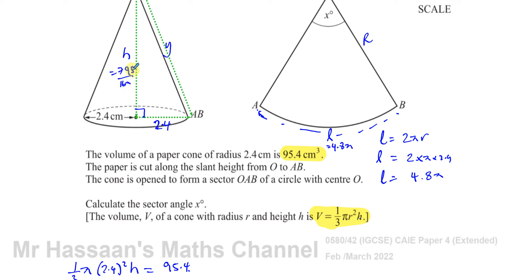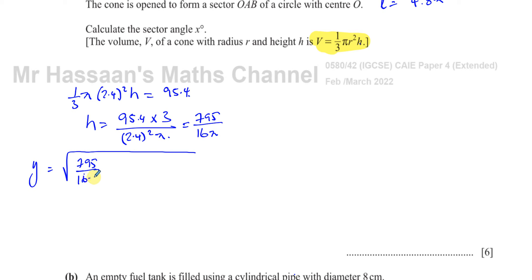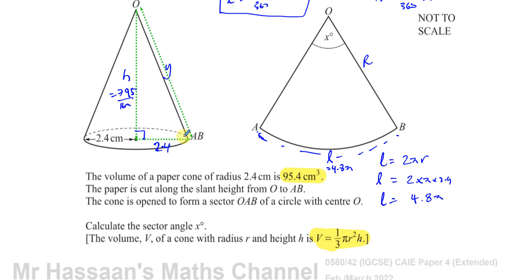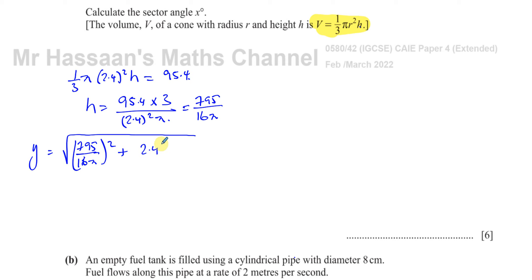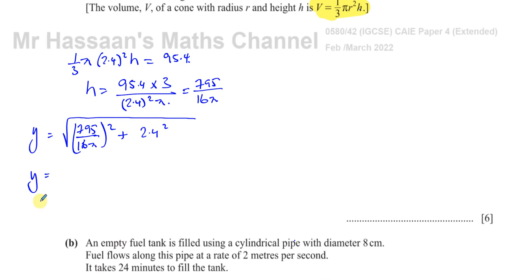With the vertical height known, I use Pythagoras' theorem to find Y: Y = √[(795/(16π))² + 2.4²]. Be careful not to write it the wrong way around — 795/(16π) is under the square root squared, plus 2.4 squared. Computing this gives approximately 15.997 cm. So the radius of the sector R ≈ 15.997 cm.